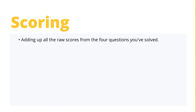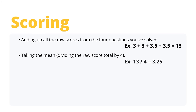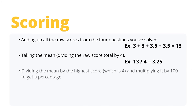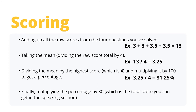Your final scale score is calculated by adding up all the raw scores from the four questions. For example, 3 plus 3 plus 3.5 plus 3.5 equals 13. Then take the mean by dividing the raw score total by 4 — for example, 13 divided by 4 equals 3.25. Divide the mean by the highest score of 4 and multiply by 100 to get a percentage — for example, 3.25 divided by 4 equals 81.25. Finally, multiply the percentage by 30, which is the total score possible in the speaking section — for example, 81.25 times 30 equals 24.